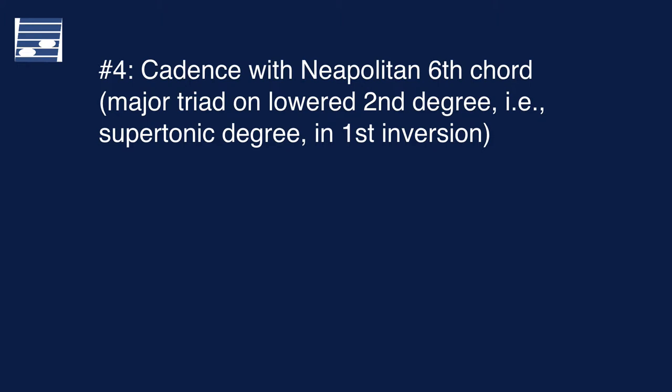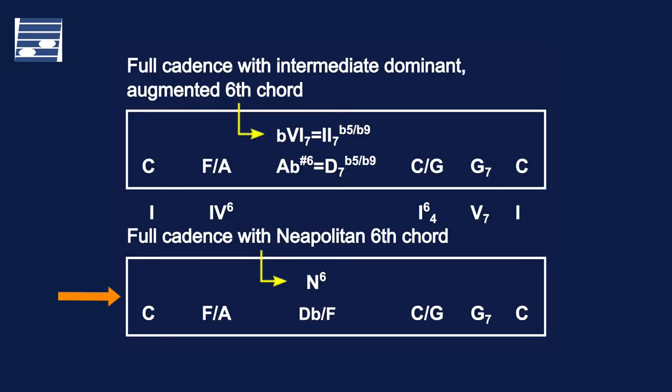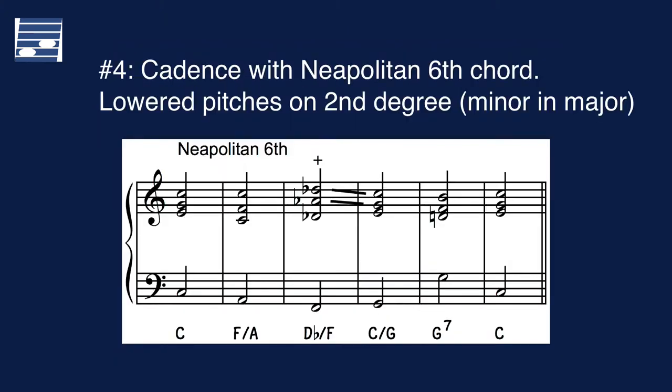The fourth element appears in the closing cadence of this transition. It is the major triad on the lowered supertonic degree in first inversion, called the Neapolitan 6th chord. The typical use in the full cadence in major is shown here in diagram, with the label N6 for the Neapolitan 6th chord. Note the use of the pitches A-flat and D-flat in the score, both with descending voice leading. These flattened pitches imply the introduction of minor key material in a major diatonic scale context. There is contrary motion between upper and lower parts.